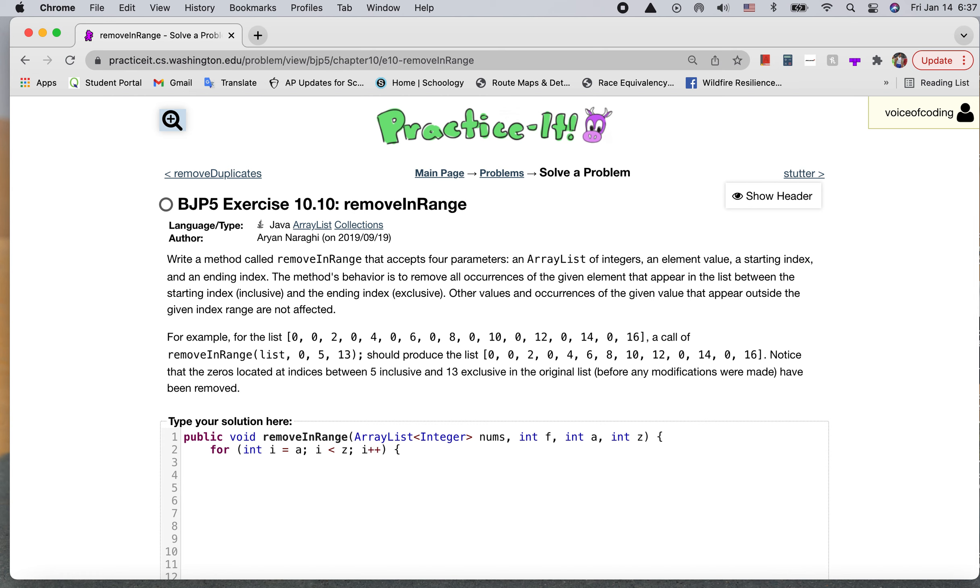Now we're actually going to compare the elements and see if they equal that element value f. If nums.get(i) equals f, then we're just going to remove that element where it occurs.